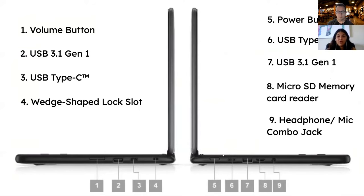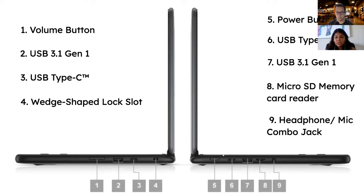Now let's look at all the buttons on the Chromebook. On the right side, starting with the one closest to you, there's a volume button. Then the next two are USB slots — a regular USB slot and a USB Type-C, which is the same connector as your charging cable. The last one, farthest from you, is a wedge-shaped lock slot. Like a bike lock, you can use a separate lock to secure your Chromebook to a stationary object in a public place.